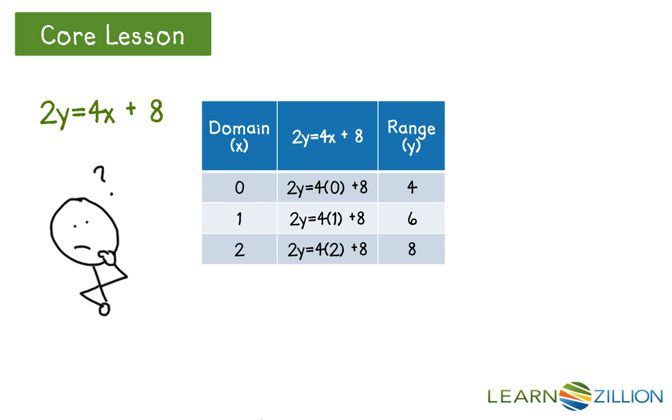If you input 0, 4 times 0 is 0, and 0 plus 8 is 8. Well, now we have 2y equals 8, so we divide both sides by 2. Therefore, y, our range value, equals 4. We continue to put domain values in for x and solve for y, and after doing this, we can see that each input only has one output.